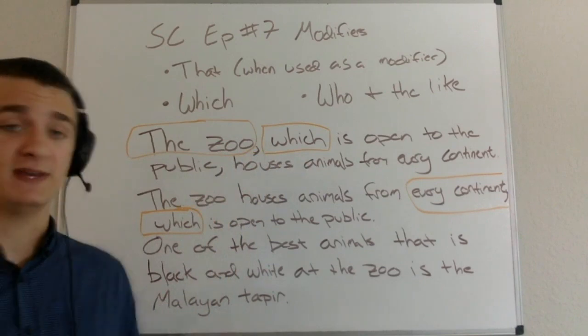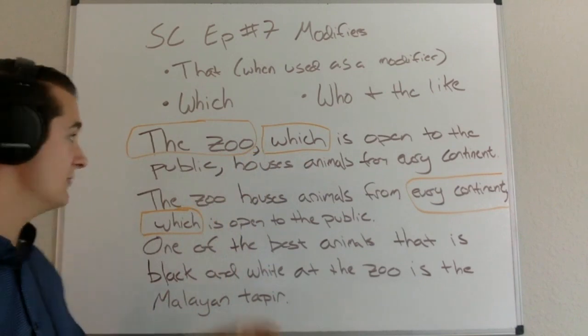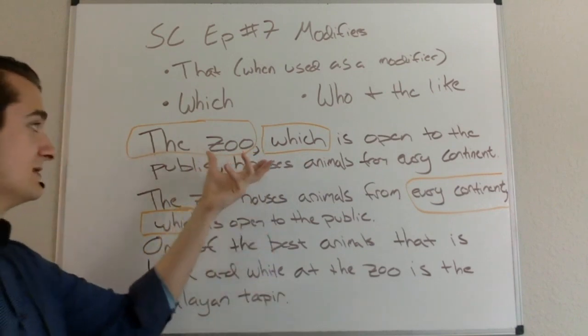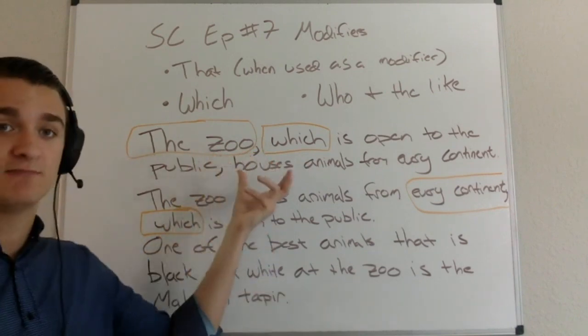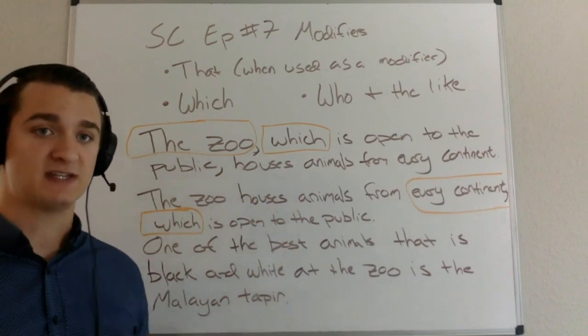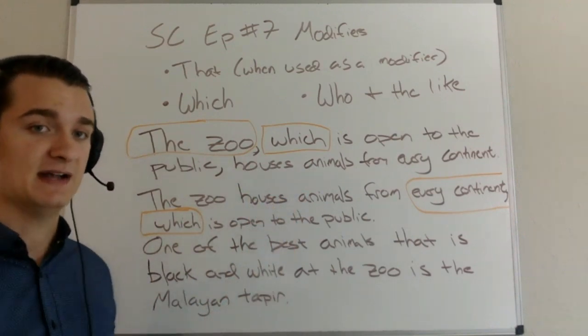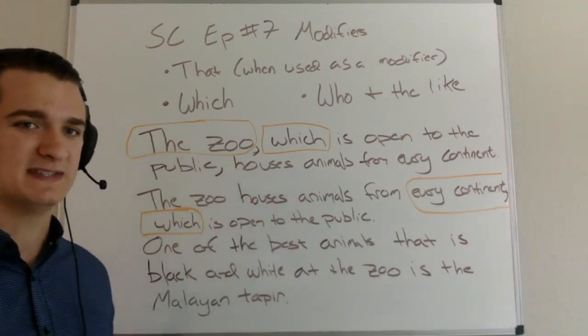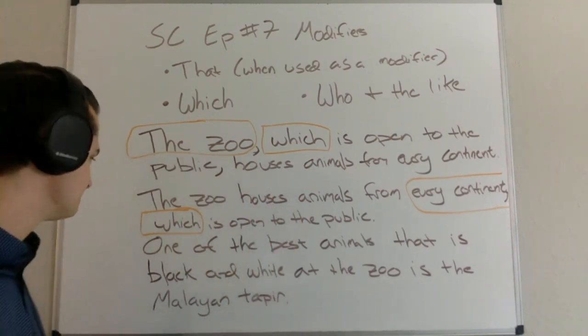It seems like I would probably be trying to say that the zoo is open to the public, but there's some confusion. So I really don't like this version of the sentence as much as the first version — I would certainly say the first more clearly expresses a logical and sound meaning.